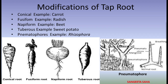The first type is the conical root, where the base is broad and it tapers gradually towards the apex — it is basically seen in carrot. Coming to the fusiform root, it is swollen at the middle part and tapering at both ends, somewhat like a spindle shape, and it is seen in radish. Next is the napiform root, which is spherical at the base and sharply tapering towards the apex, and it is found in beet and turnip.